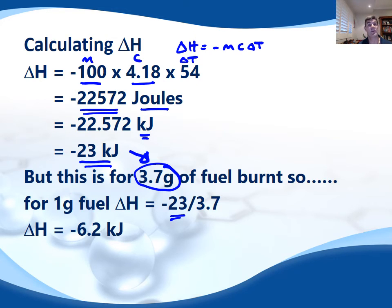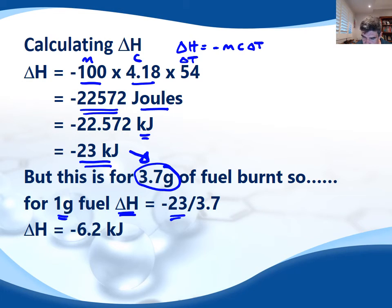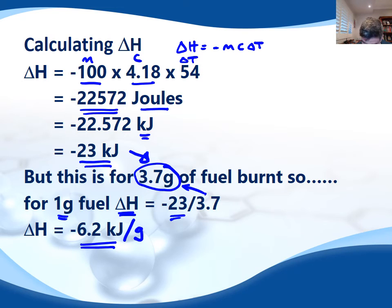Two things we can do. Firstly, we can reduce this value back to a per gram value. The delta H value per gram of ethanol is simply 23 kilojoules divided by the mass of 3.7 grams, which gives us a value of −6.2 kilojoules per gram for ethanol. This is a simple way to get the calculation to a value of kilojoules per gram.